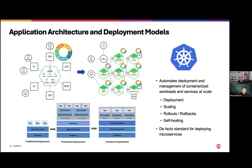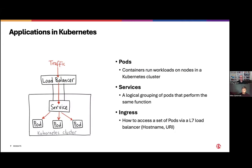One of the ways we do that is by using a load balancer inside of Kubernetes. When we talk about Kubernetes, there are a few things we need to understand: a Kubernetes cluster has several nodes, and those nodes could be either physical bare metal machines or virtual machines. When we talk about deployment of applications, we're typically looking at a pod.